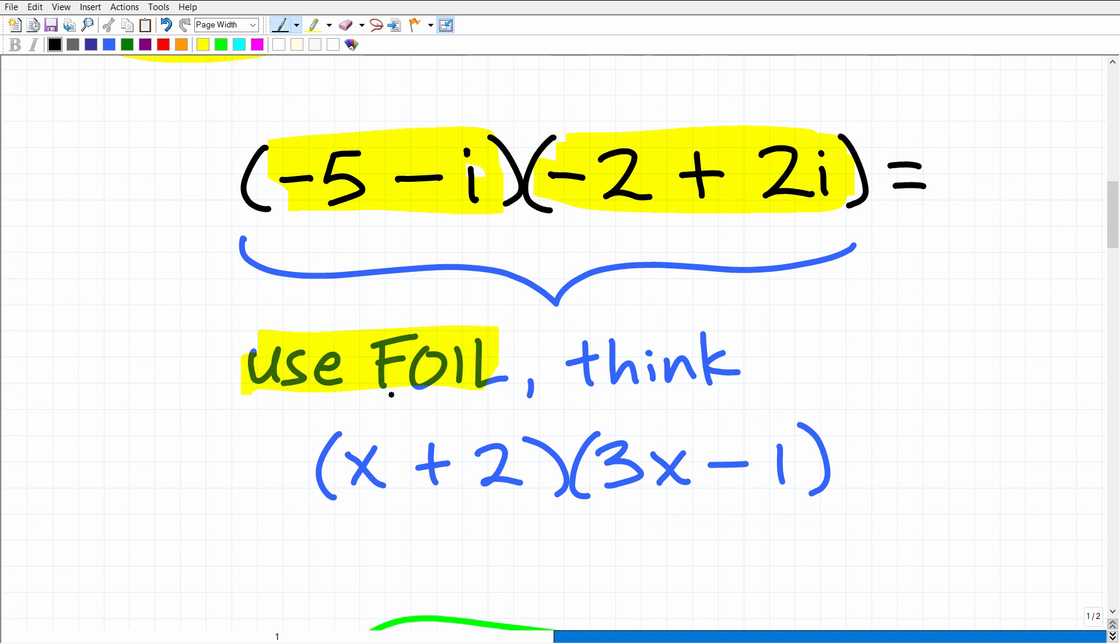If you forgot what the FOIL technique is, that's just First, Outer, Inner, Last. But basically, that's just a little acronym to multiply two binomials. Whether you use FOIL or some other method, it's basically taking the same steps. So we have a binomial here and a binomial here, effectively, and we're going to multiply those binomials.